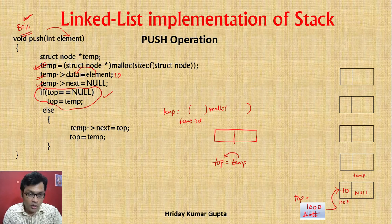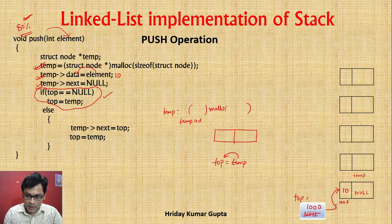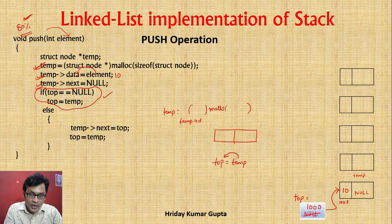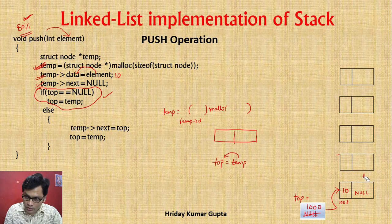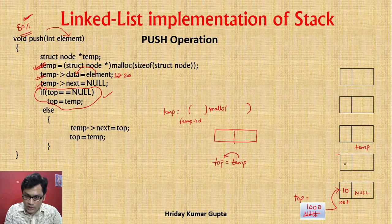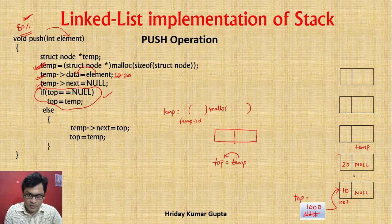Suppose the user does a push operation — wants to push another element. The other node is created, named temp. Now here is temp. Temp data — suppose I have given 20. Now 20 is there. This temp's next we have null. This is easy to see, and the program is easy to see.